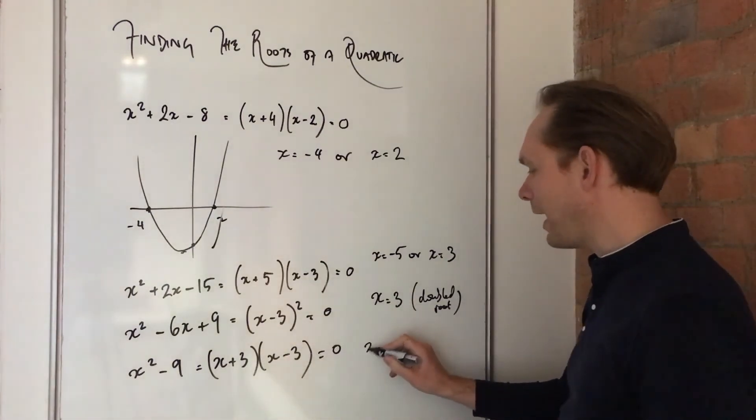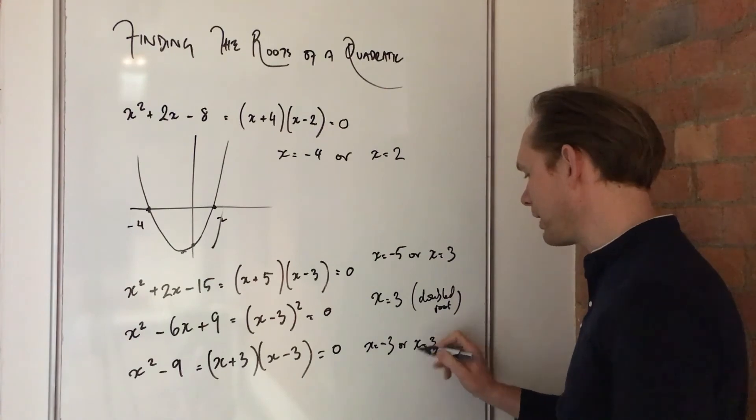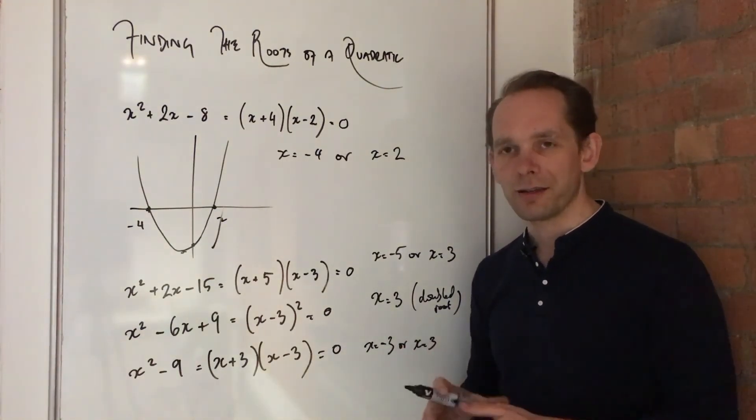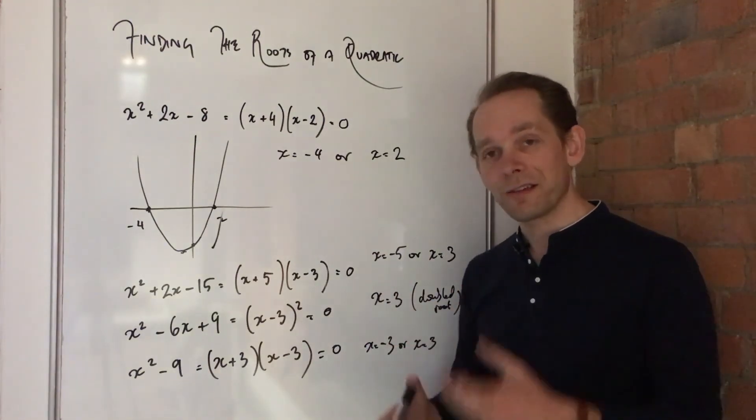And then the answer will be x equals minus 3, or x equals 3. You always write it out in full. You don't say x is plus or minus 3. That's bad, so don't do that. So, hope that was helpful. Thanks very much for watching.